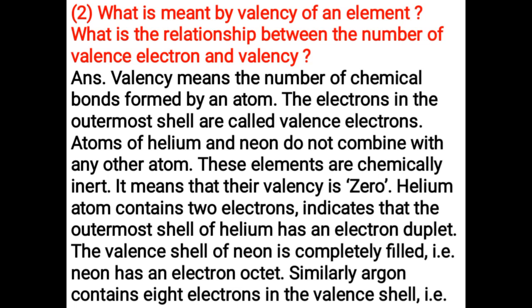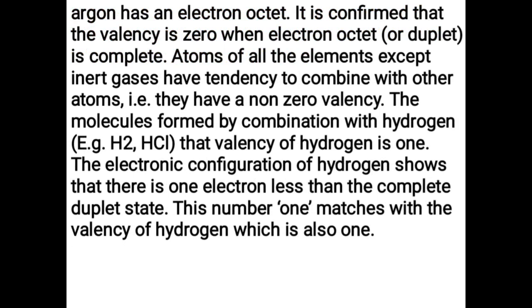Helium atom contains two electrons, indicating that the outermost shell of helium has an electron duplet. The valence shell of neon is completely filled — that is, neon has an electron octet. Similarly, argon contains eight electrons in the valence shell, that is, argon also has an electron octet. It is confirmed that the valence is zero when the electron octet or duplet is complete.